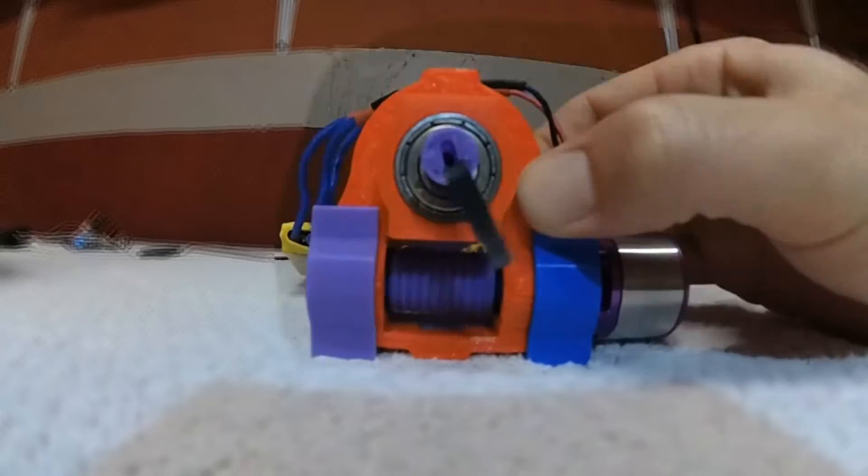The gearbox is roughly reducing 9,600 RPM from the motor down to 240 RPM through the output shaft.